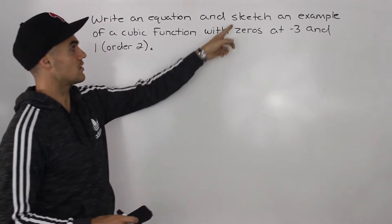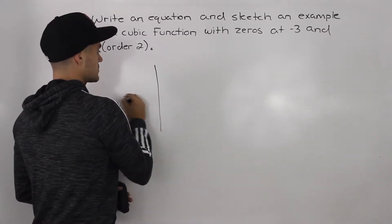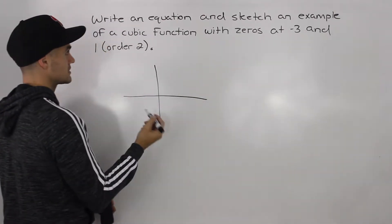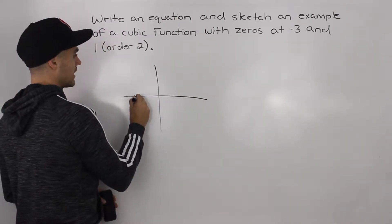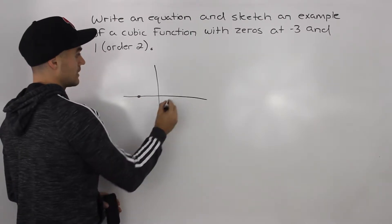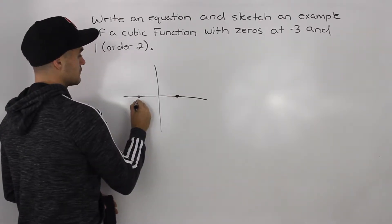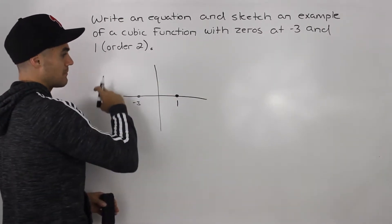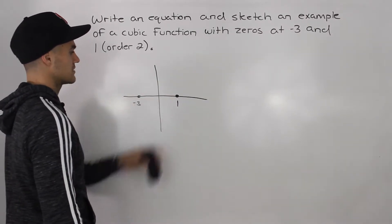Now let's start off with the sketch. So zeros, that's the same thing as x-intercepts. So we know that this cubic function is going to have an x-intercept at negative 3 and at positive 1. And at positive 1, it's going to have an order 2, meaning that it's going to bounce off at positive 1.